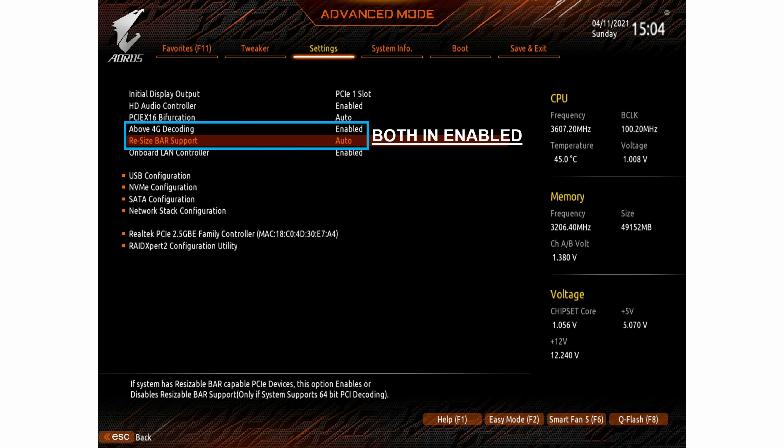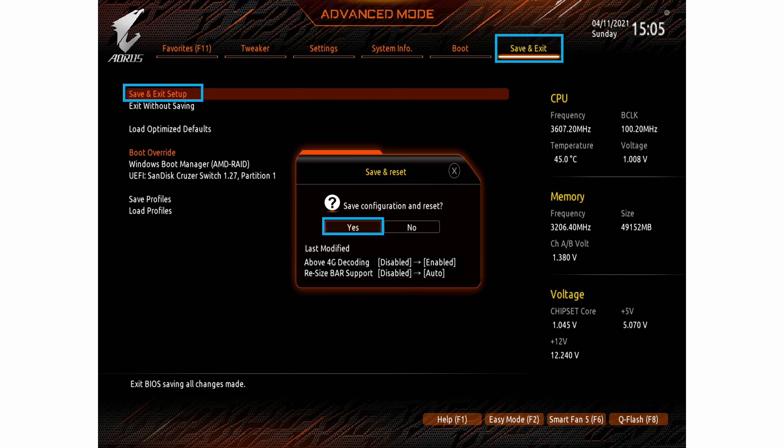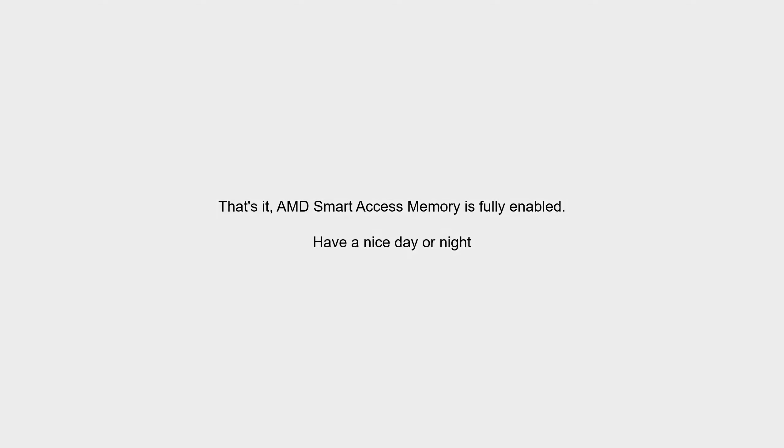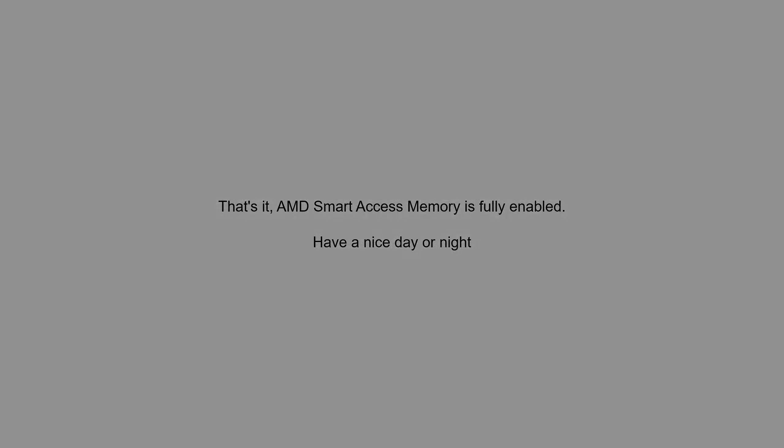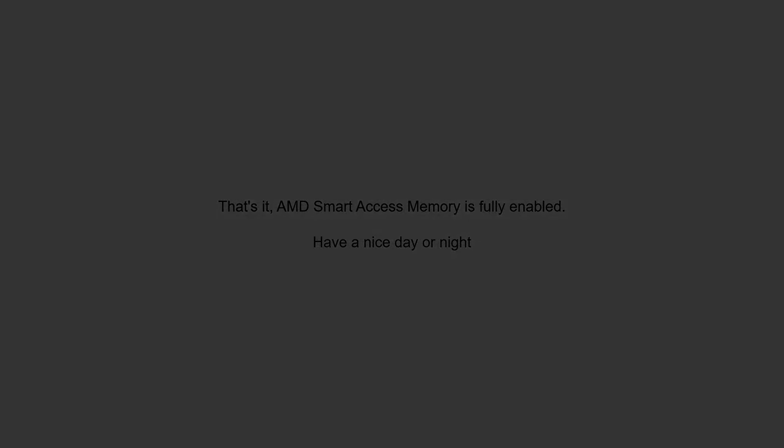After that, we need to go to save and exit setup, and we need to confirm to save configuration and reset — press yes. And yes, that is it. AMD Smart Access Memory is fully enabled. It is really, really easy. Have a nice day, bye!